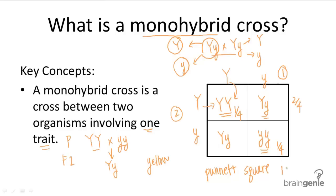So notice the 1 to 2 to 1 genotype ratio. And all crosses involving two heterozygous organisms will have this genotype ratio.